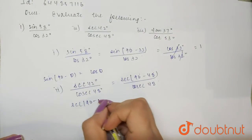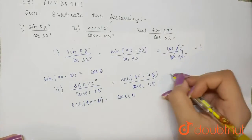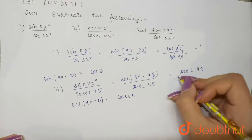that secant of (90 - θ) equals cosecant θ. So this is basically cosecant 48° divided by cosecant 48°. This will cancel out and we will get one. Now the third one is tan 37°